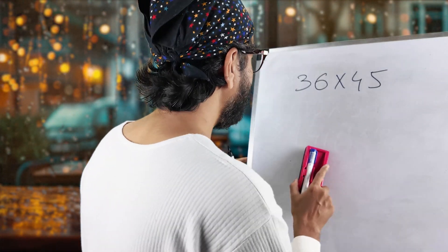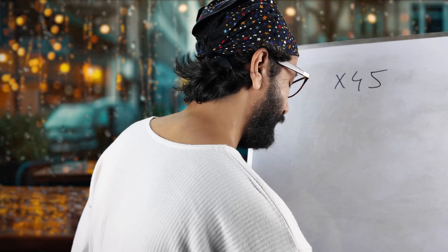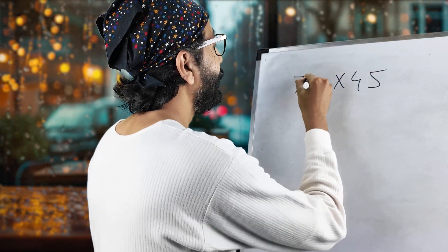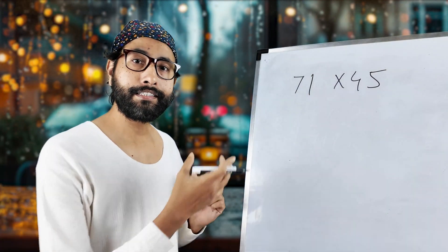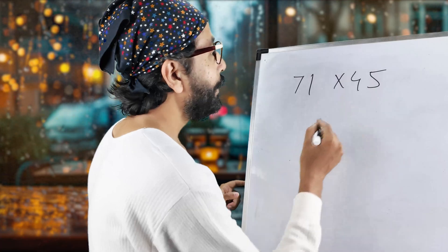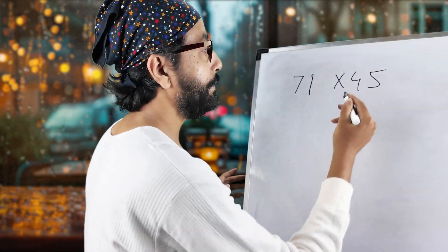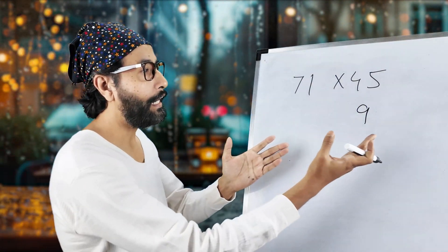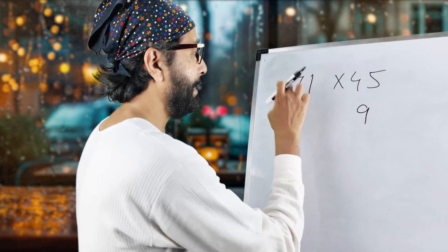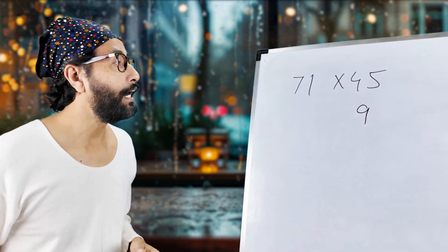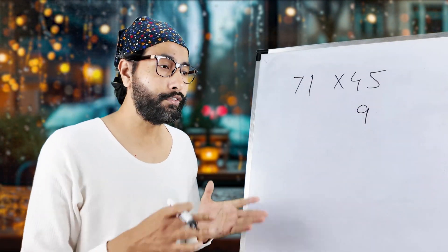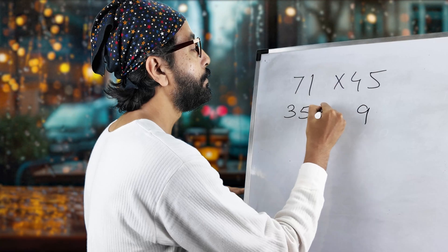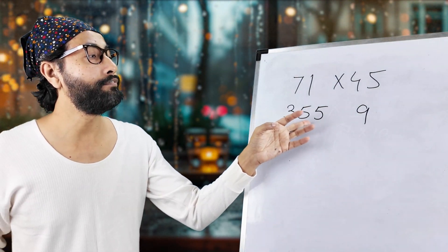A little tougher one: 71 multiplied by 45. Odd number — how do we handle this? First and foremost, we are going to double 45. That gives 90. But I'm going to write 9, because the 10 gets multiplied on this side. Now, half of 71: half of 70 is 35, so it's 35.5. This time I'm writing directly 355.